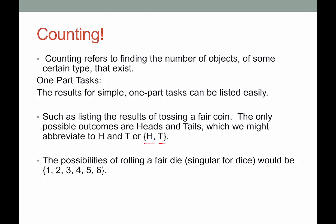Another example of a one-part task would be rolling a fair die. Keep in mind that die is the singular of dice. The possibilities if you roll a single fair die would be 1, 2, 3, 4, 5, or 6. These outcomes listed in braces are called the sample space, and that's another element of counting theory that we'll talk about.